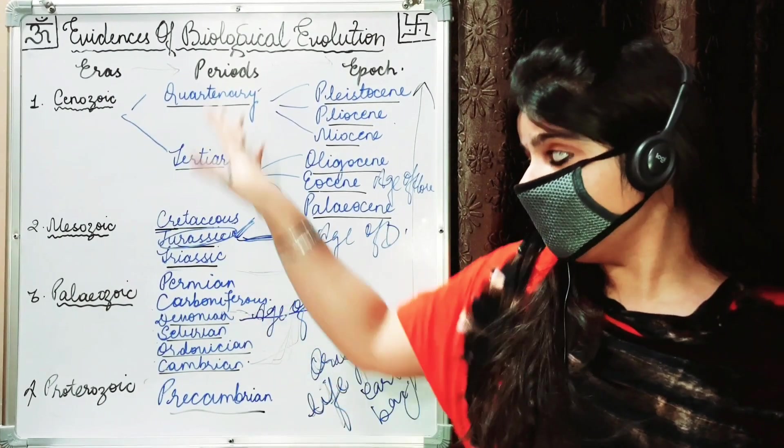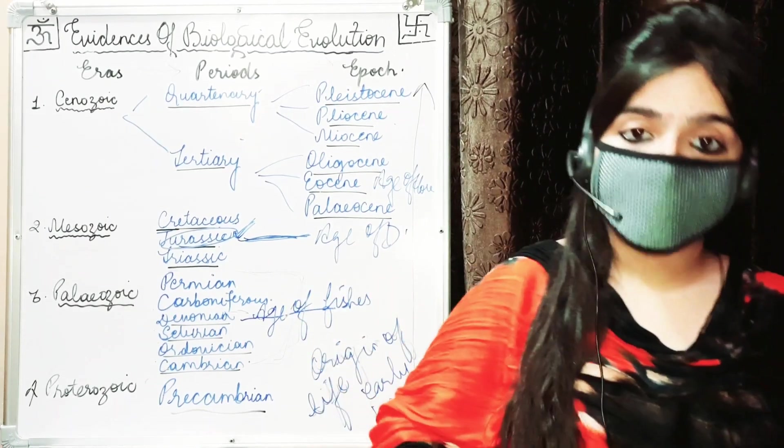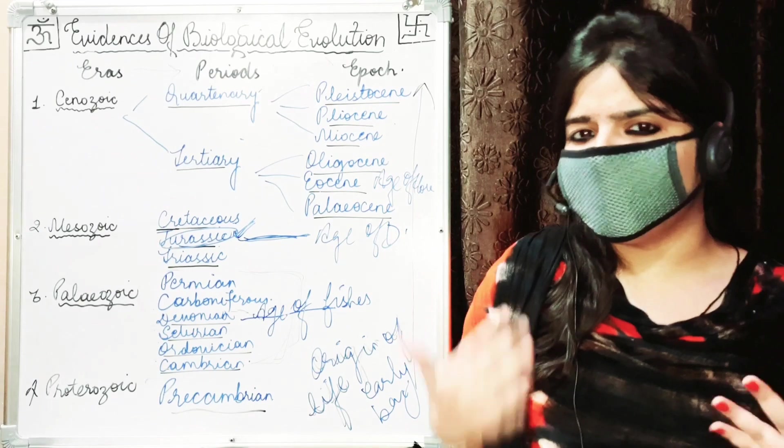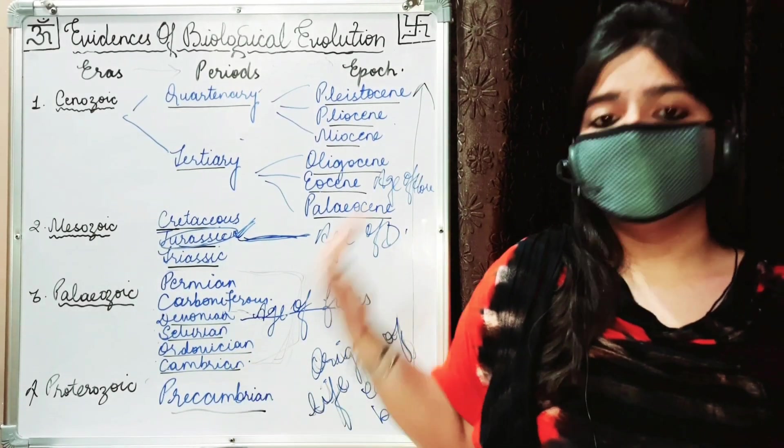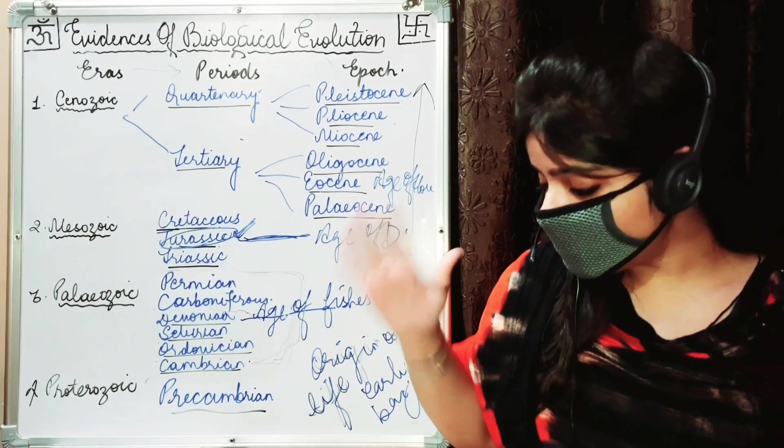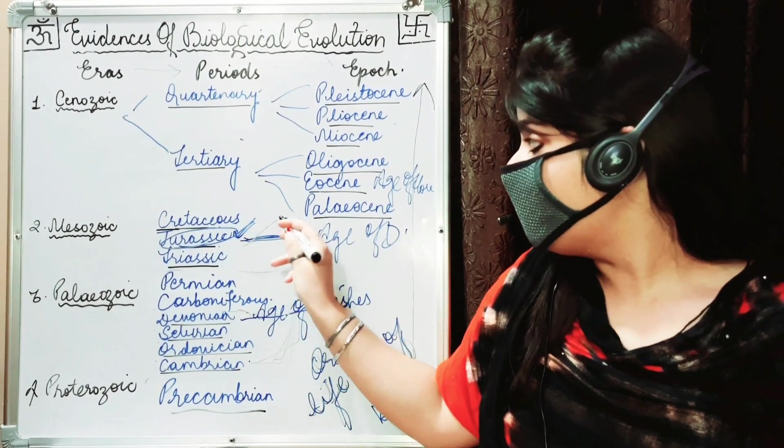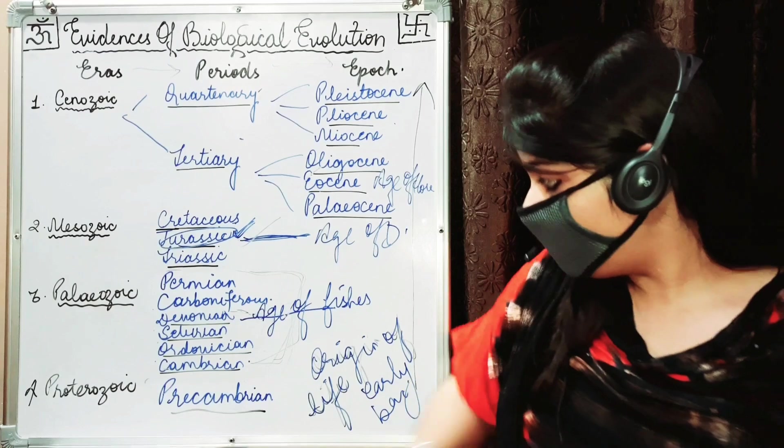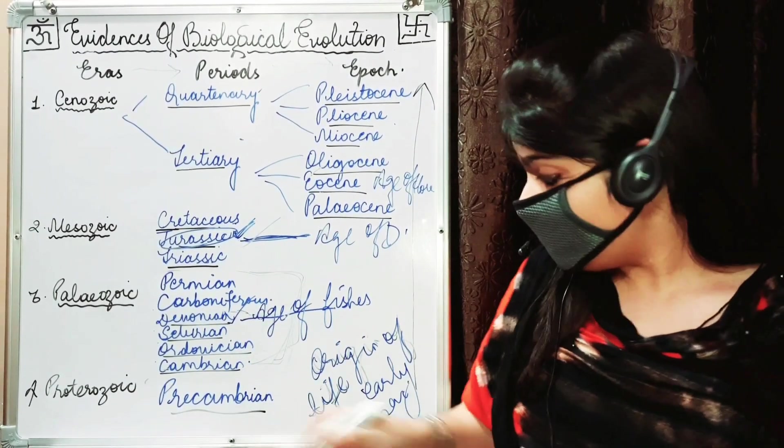You can go through it. If you have to study details, otherwise this chart is not required, not necessary to learn for boards. If you are working for NEET, then you can go through it. Otherwise you can skip this chart. Just what you have to remember is the age of dinosaurs, age of horses, age of fishes, that's all, and early bacterias.